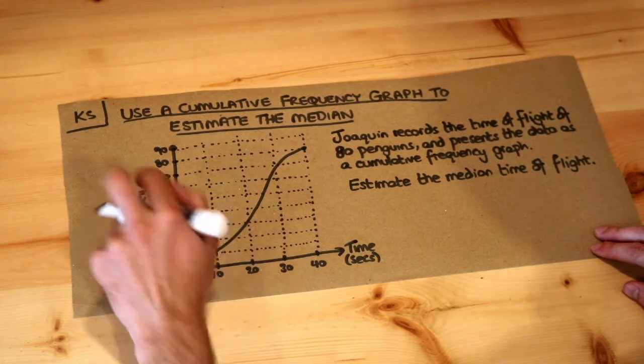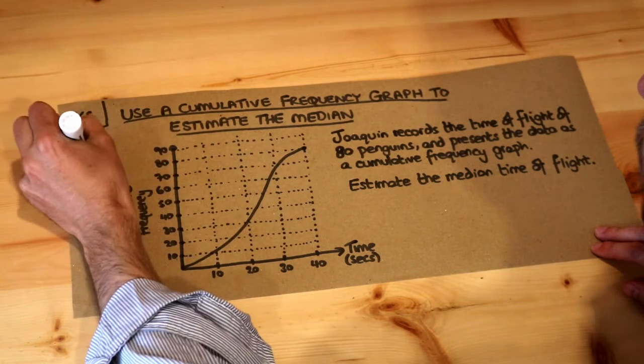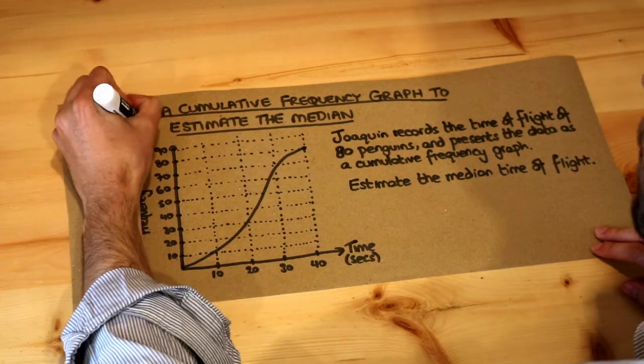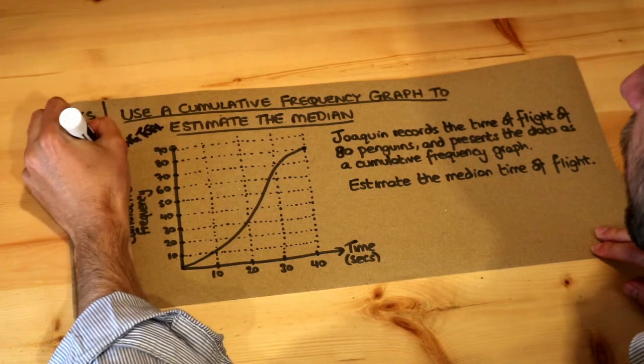But remember that cumulative frequency means the running total, and we can sort of think of it as the phrase "up to."